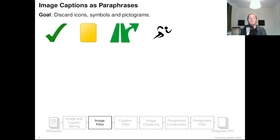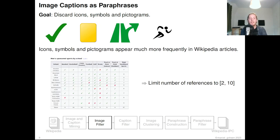Icons, symbols, and pictograms are usually provided with a trivial caption or no caption at all. Hence, we immediately discard these images and their captions. For that, we found that these symbols are much more common in Wikipedia. Therefore, we limit the number of their references to between 2 and 10.